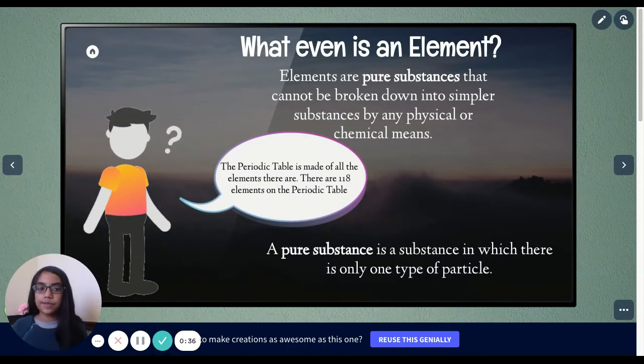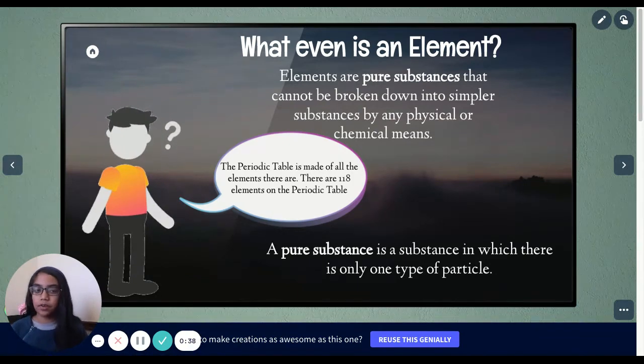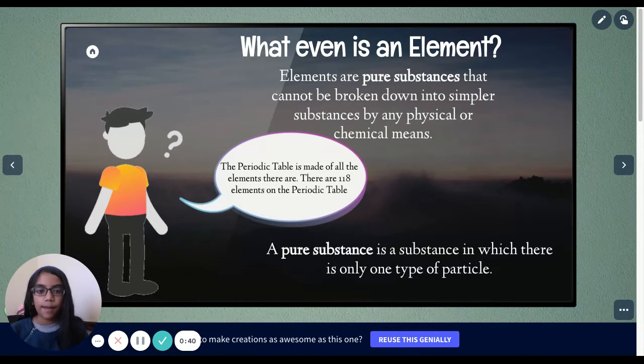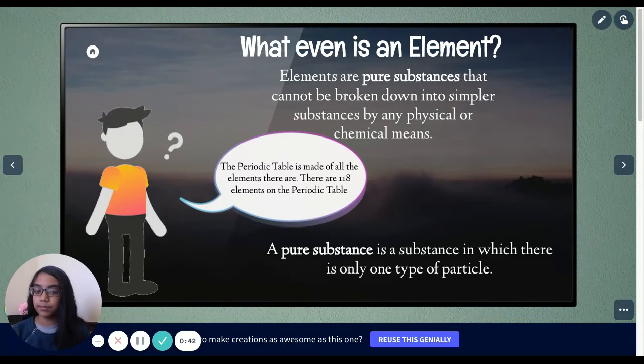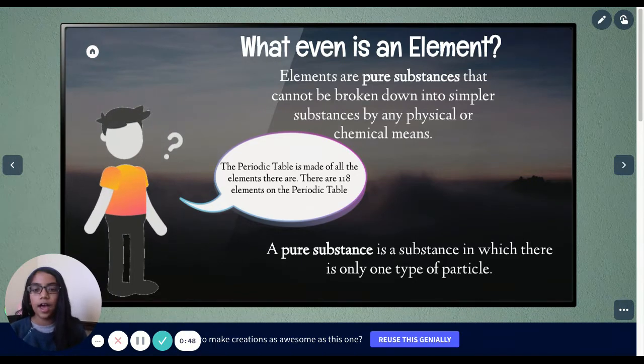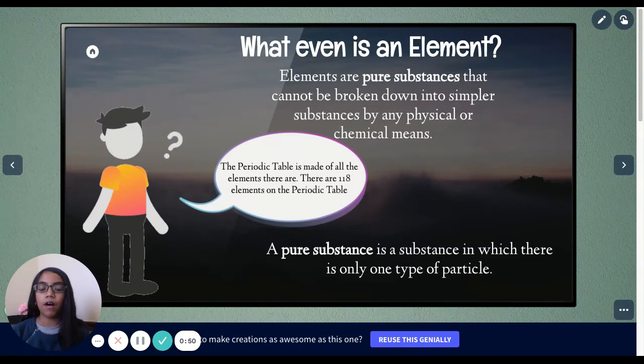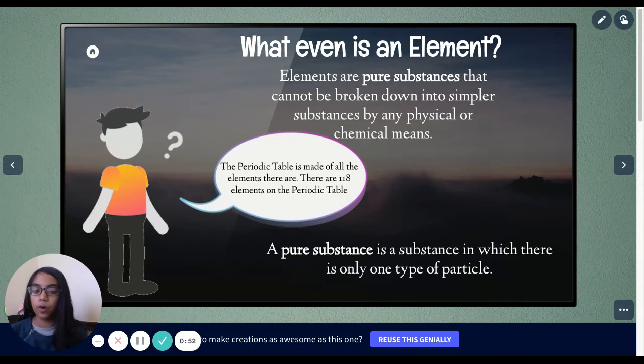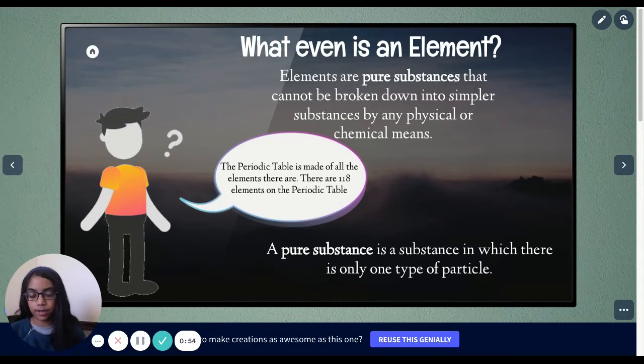Elements are pure substances that cannot be broken down into simpler substances by any physical or chemical means. A pure substance is a substance in which there is only one type of particle. The periodic table is made of all the elements there are. There are 118 elements on the periodic table.